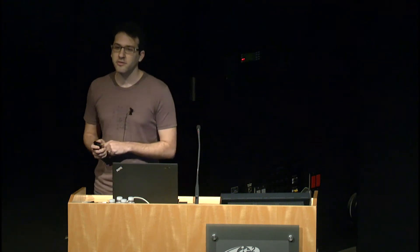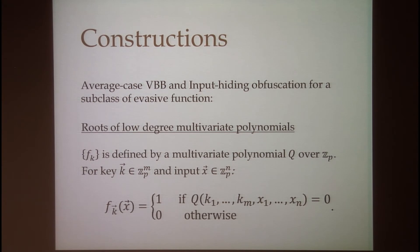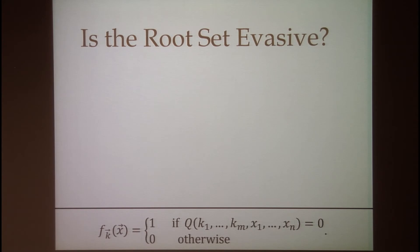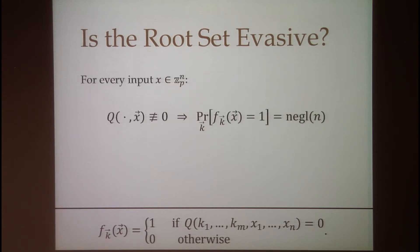We construct both average case VBB and input hiding obfuscation for a subclass of evasive functions that describe the set of roots of a low degree multivariate polynomial. Every function family in our class is defined by a polynomial q over Z_p, where p is exponential in the security parameter and the degree of q is polynomial. The key k is a vector of m elements in Z_p and the input x is a vector of n elements; the function f_k outputs 1 if q evaluated on the elements of k and x equals zero, and 0 otherwise. These families are evasive because q is of low degree and by the Schwartz-Zippel lemma, the function outputs 1 for only a negligible fraction of keys for any fixed input x.